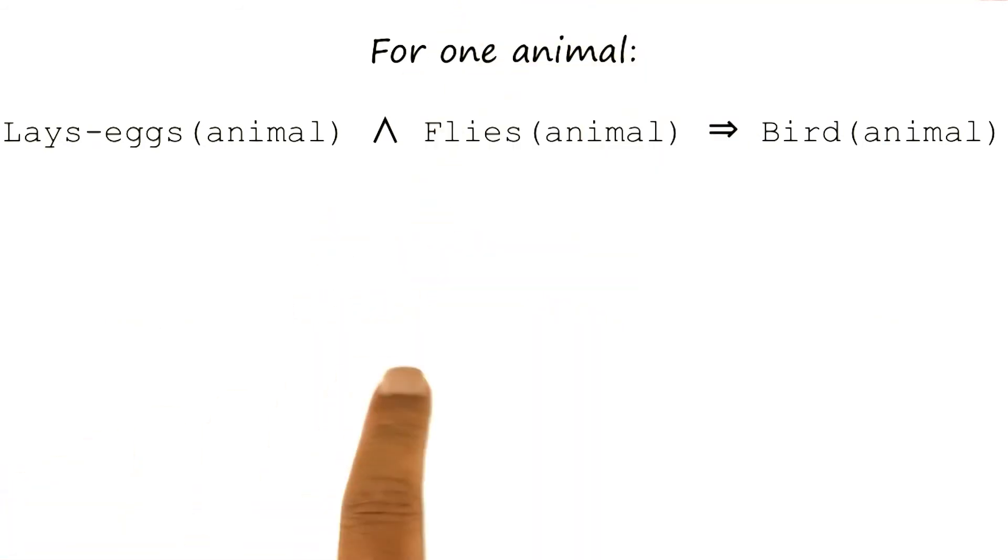So we have introduced variables and we have talked about at least one quantifier so far, the universal quantifier that applies for all values that that variable can take. Sometimes I might want to specify a different range of the variable, not all values that the variable can take, but at least some values that the variable can take.